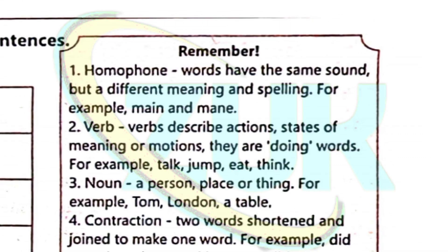Homophones are words that have the same sound but different meanings and different spellings. For example, 'man' and 'man' — same pronunciation but different spelling. For instance, 'main' spelled M-A-I-N.